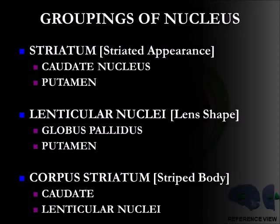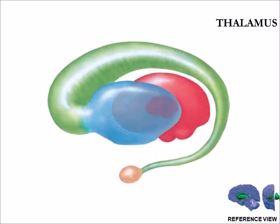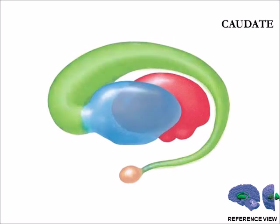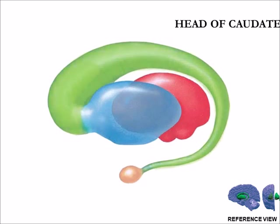In the reference view, the thalamus is located in the center, laterally followed by the lens-shaped putamen and globus pallidus. Like the lateral ventricles, the caudate is a C-shaped structure with a thick anterior portion called the head, which becomes narrower as it extends towards the back of the brain. The middle portion of the caudate is known as the body, and this tapers off into the tail of the caudate.